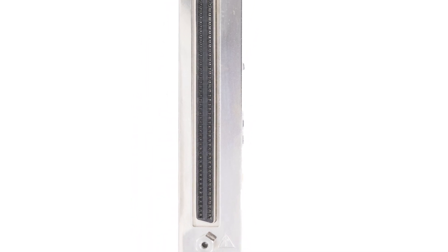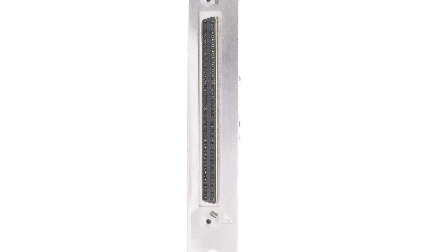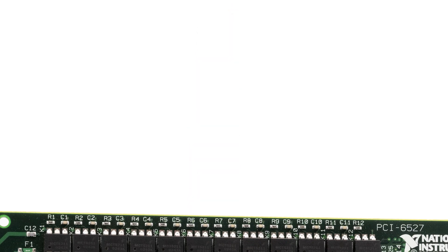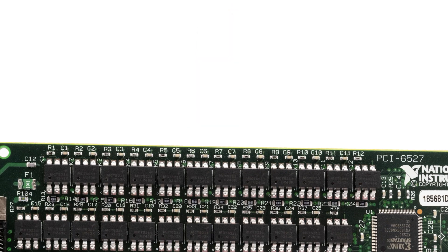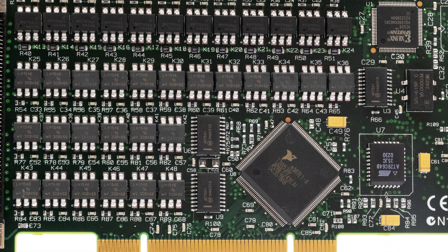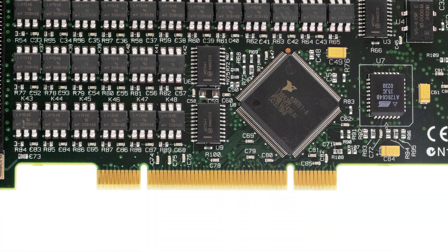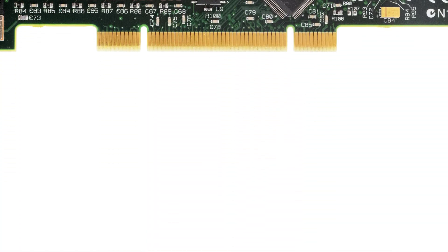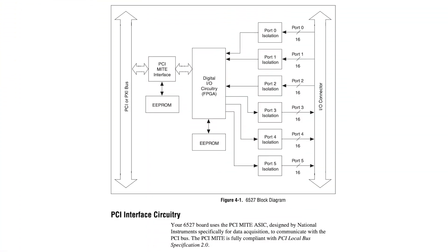The PCI6527 is equipped with a 100-pin female I/O connector and digital filtering to eliminate input line glitches or spikes. Additionally, all input lines can generate interrupts on rising or falling edges, alerting users to data changes.